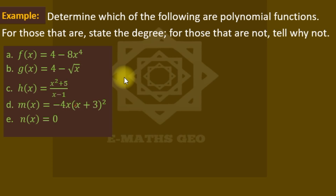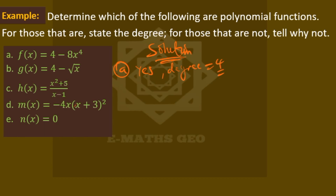Now look at this example. We shall determine which are polynomial functions — for those that are, we state the degree; for those that are not, we explain why not. The first one is a polynomial function because the highest power is four and the coefficients are real numbers, so the degree is four.